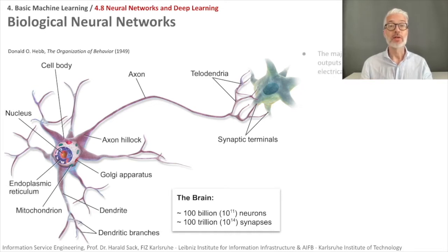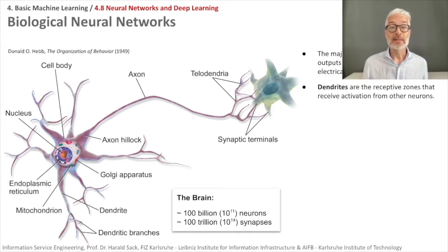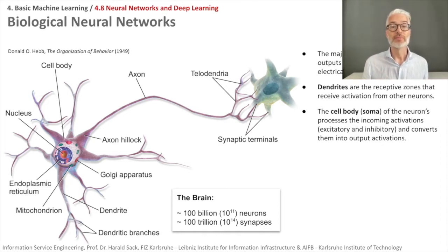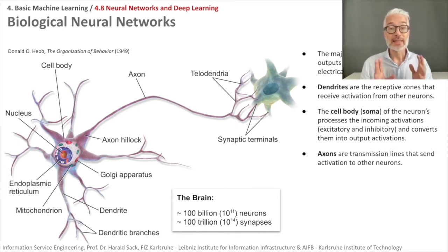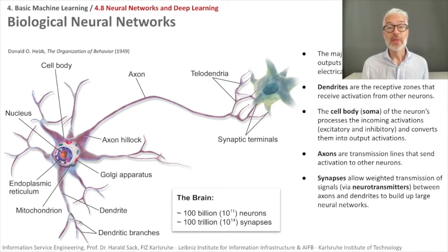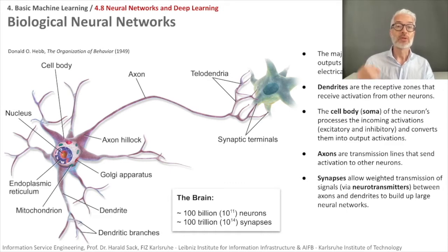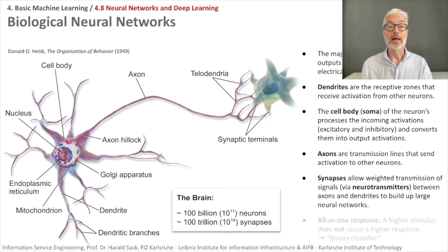Neurons are connected via 100 trillion — that is 10 to the power of 14 — synapses. The majority of neurons encode their outputs or activations as a series of electrical impulses. There are so-called dendrites, which are the receptive zones that receive activation from other neurons. The cell body, the soma, processes the incoming activations — they may be excitatory or inhibitory — and converts them to an output activation. Axons are transmission lines that send these activations to other neurons. Synapses allow a weighted transmission; learning takes place in the synapses through electrochemical neurotransmitters between axons and dendrites, allowing large neural networks to be built.